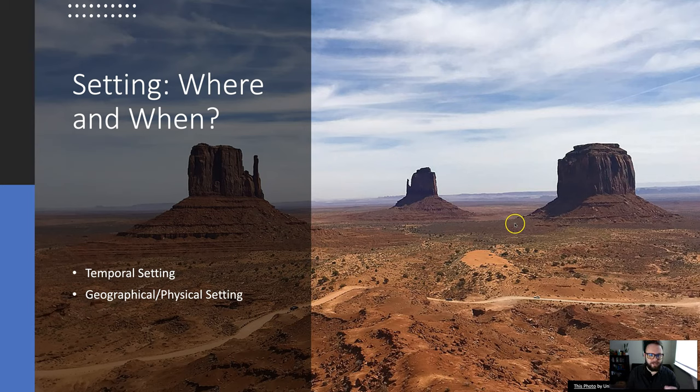Now that we've got the what happening, let's talk about the where: setting. There are really two types of setting that we talk about. We talk about temporal setting, which is the when. When is our story set? Is it set in what we would call the author's time, which is just when the author is composing the story?